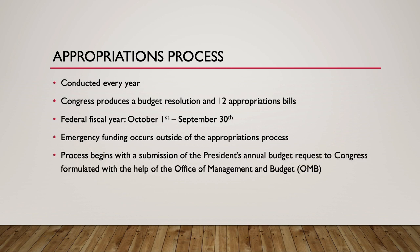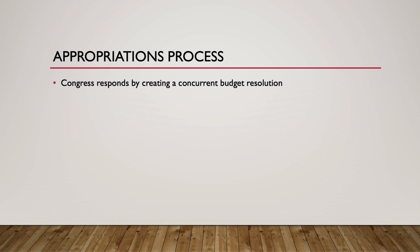The federal funding process begins with the President, who will submit an annual budget request to Congress, typically on the first Monday of February. The budget request is formulated over several months with the assistance of the OMB, the Office of Management and Budget. After this, Congress responds by creating a concurrent congressional budget resolution, which includes setting the total level of discretionary funding, known as the 302A allocation.